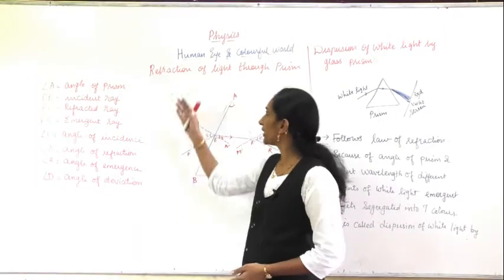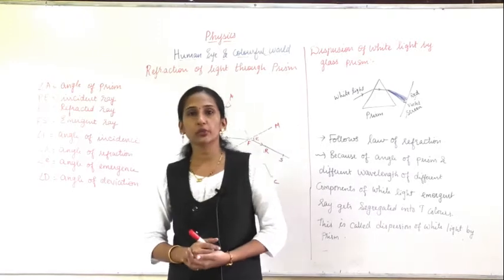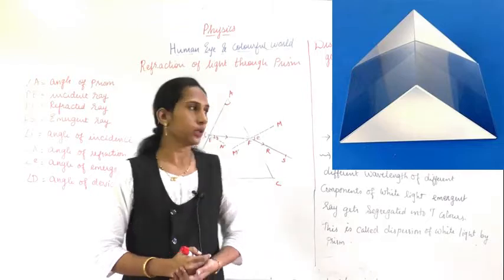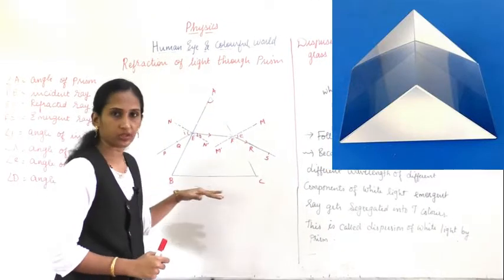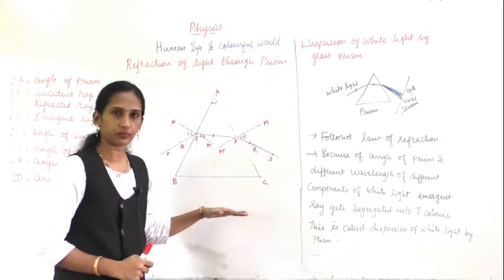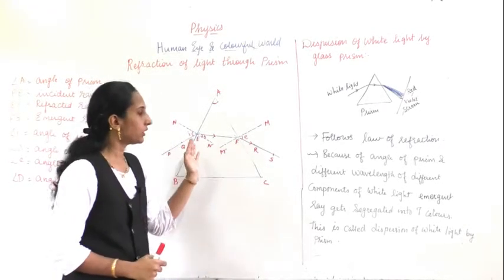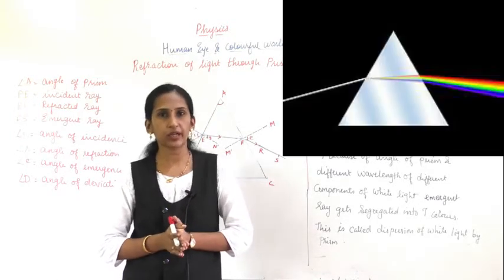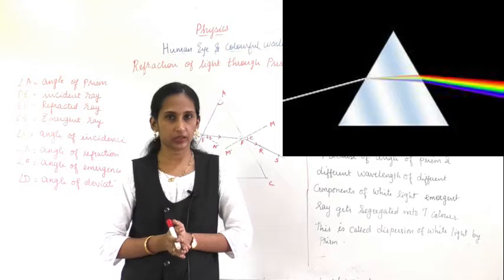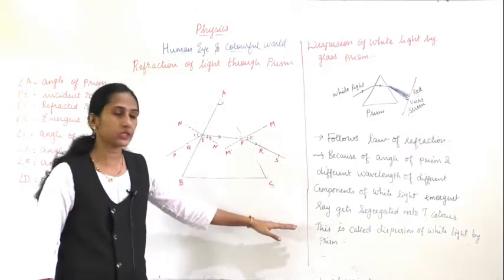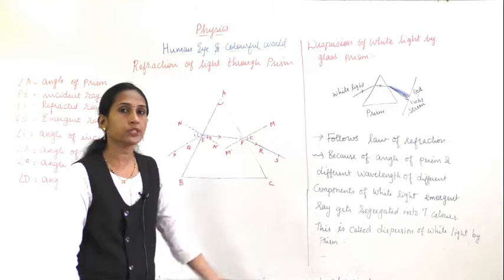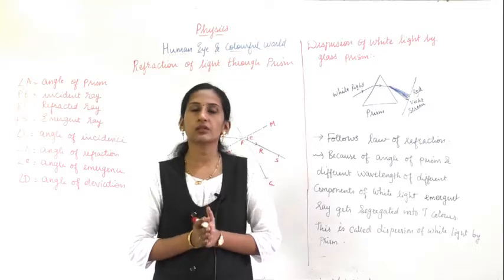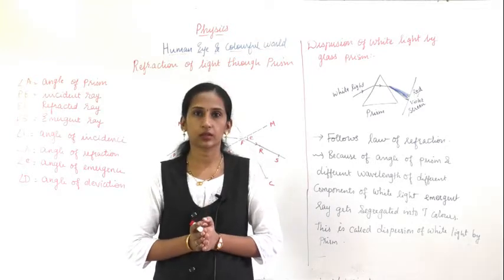Today's topic is refraction of light through a prism. You are going to study about the prism. A prism is a glass triangular-shaped object. It is used for the dispersion of light — dispersion of light means the splitting of light, which you have studied in 8th standard.